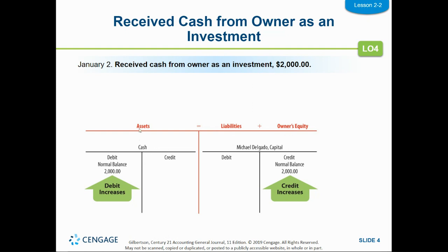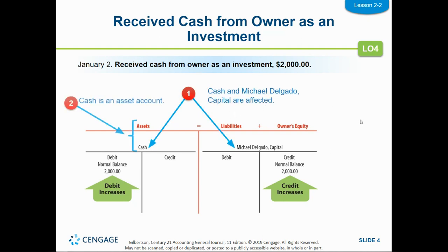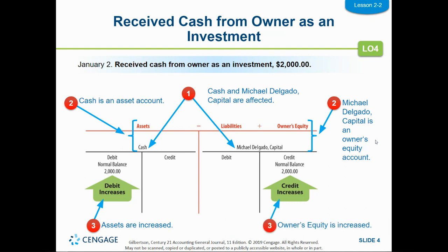Cash is an asset; assets go up with a debit. Which accounts are affected? Cash and capital. How is each account classified? Cash is an asset; capital is an owner's equity account. How is each classification changed? We're receiving cash, so cash is going up — and it goes up with a debit. Capital is also going up — with a credit. Both sides of our accounting equation are increasing, so the accounting equation stays in balance. Cash is debited and capital is credited.